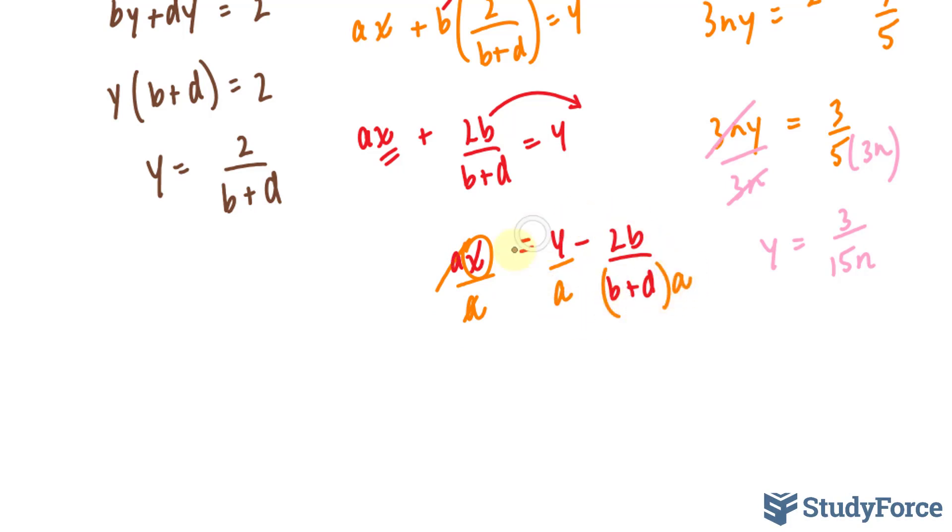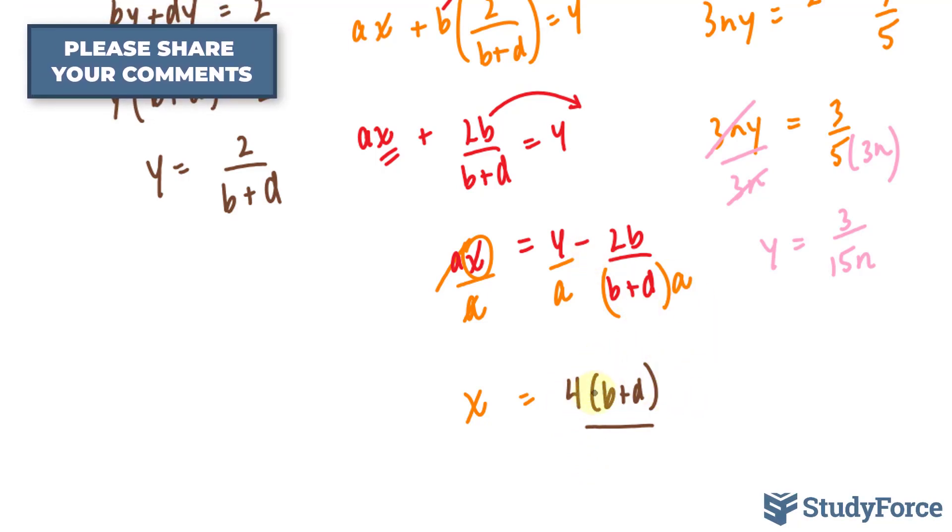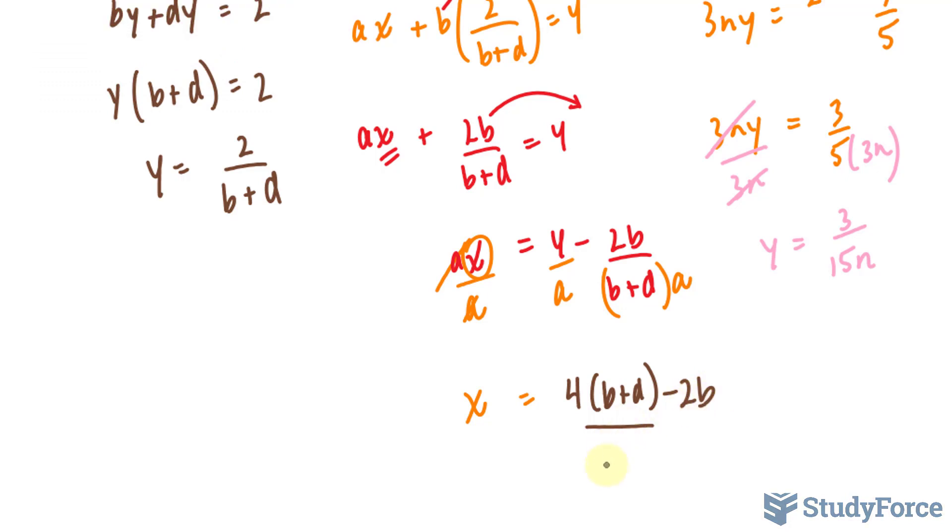We can combine these two terms as well. We can combine them by finding a common denominator. We can multiply the denominator here and the numerator here by b plus d. Giving us 4 times b plus d over, and since the denominator is common, we can write down both terms at the top, b bracket b plus d minus 2b all over a(b plus d). This represents our x coordinate. This represents our y coordinate. And that represents the point of intersection.